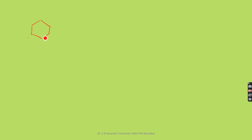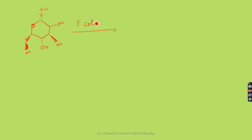We take the glucose molecule, which is subjected to fermentation. The E. coli bacteria help to convert this glucose into a 3-hydroxy shikimate component. It is also called 3-hydroxy shikimic acid, because the hydroxy group is converted into a COOH group — giving a shikimate or 3-hydroxy shikimate compound.